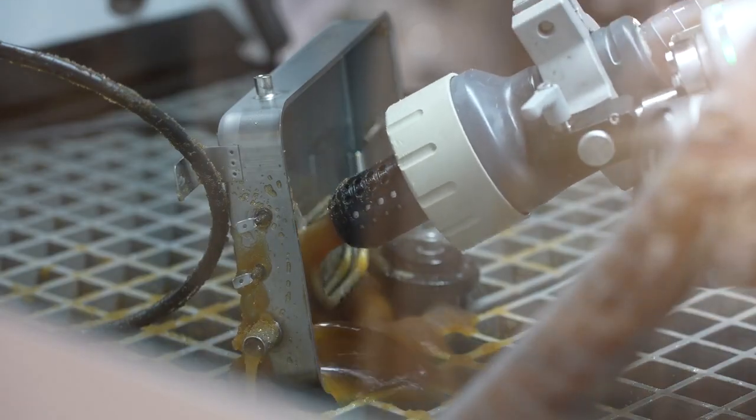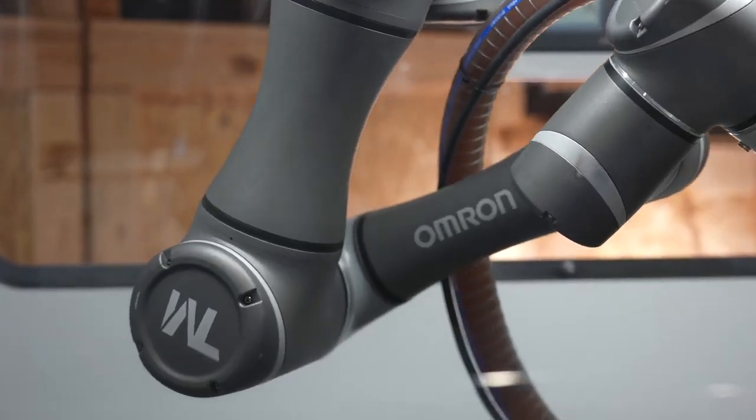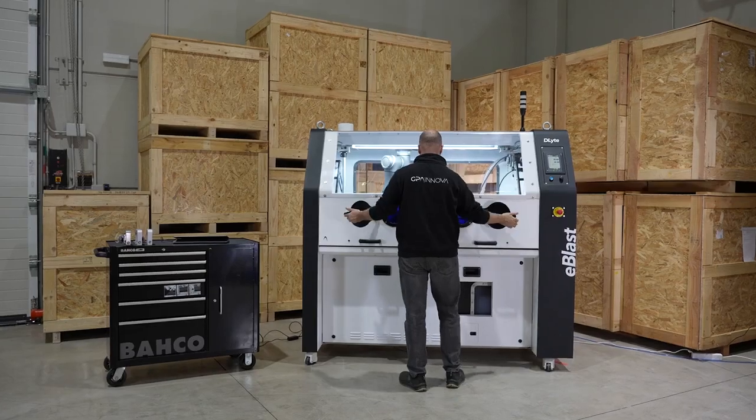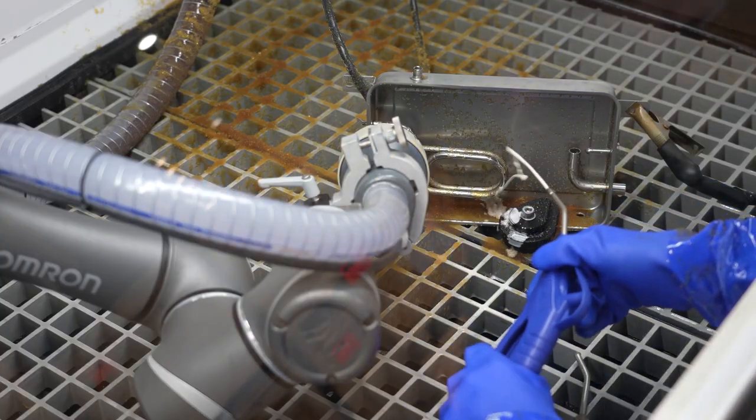The system performs automated surfacing by means of an easy to use robotized collaborative arm which makes the electrolyte media flow efficiently through the desired surface area, increasing the process performance.